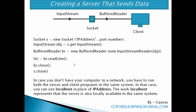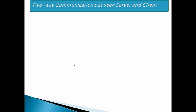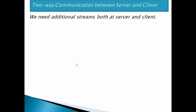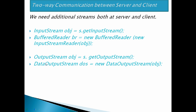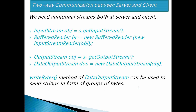Now, how to do two-way communication between server and client? It is possible to send data from the server and receive a response from the client, and similarly the client can also send and receive data. For this purpose, we need additional streams both at the server and client sides. To receive data into the server, use a BufferedReader: InputStream obj = s.getInputStream(); BufferedReader br = new BufferedReader(new InputStreamReader(obj)). To send data from the client, use DataOutputStream: OutputStream obj = s.getOutputStream(); DataOutputStream dos = new DataOutputStream(obj). The writeBytes() method of DataOutputStream is used to send strings as a group of bytes.